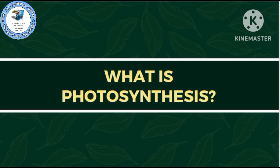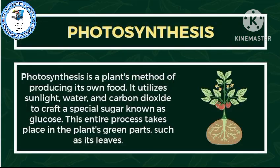What is photosynthesis? Photosynthesis is a plant's method of producing its own food. It utilizes sunlight, water, and carbon dioxide to craft a special sugar known as glucose. This entire process takes place in the plant's green parts, such as its leaves.